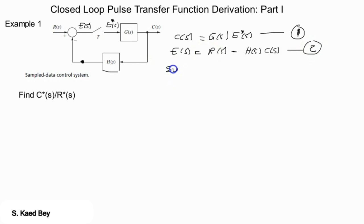So if we substitute one into two we get E of s equal to R of s minus G of s H of s E star of s. If you notice here we have a star D and here we don't have a star.